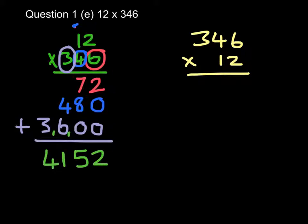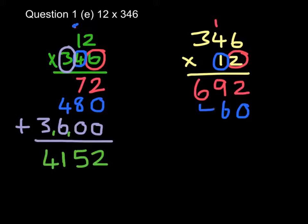And of course, if I did it the other way around, then I would multiply by the 2 first of all. So 2 times 6 is 12, put down your 2, carry your 1. 2 times 4 is 8, add 1 is 9. 2 times 3 is 6. Put down my 0 before I multiply, because I'm going to multiply by 10. 1 times 6 is 6, 1 times 4 is 4, and 1 times 3 is 3.